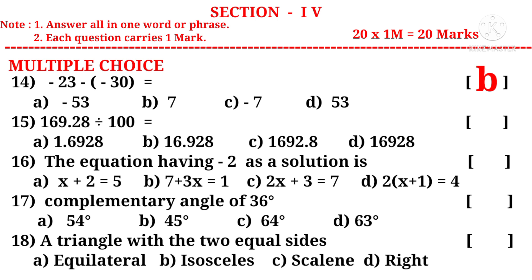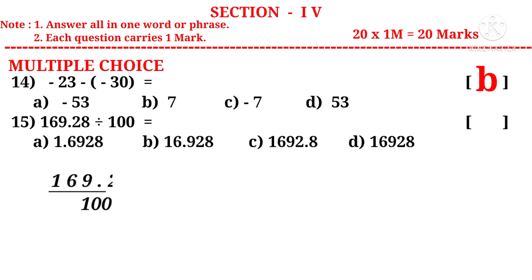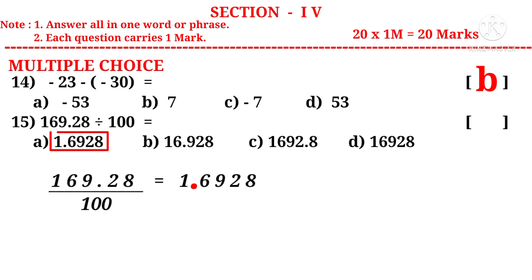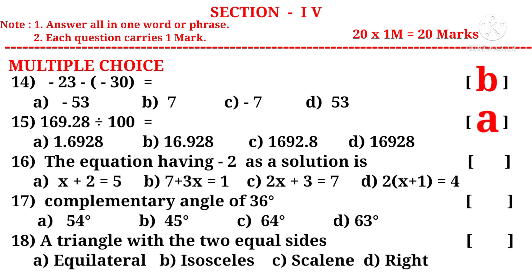Question 15: 169.28 divided by 100 is equal to — observe that there are two zeros in the denominator, so the decimal point shifts from right to left by two digits, shifting from the right side of 9 to the left side of 6. The correct choice is A.